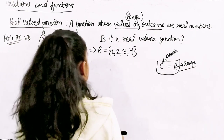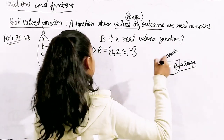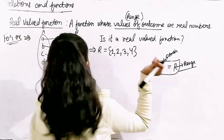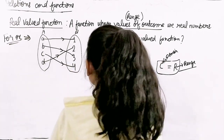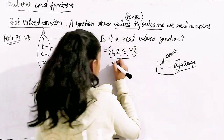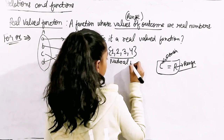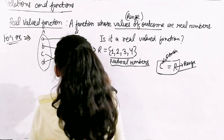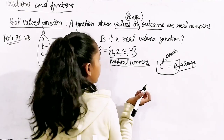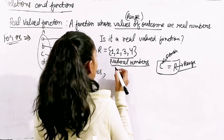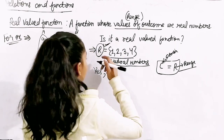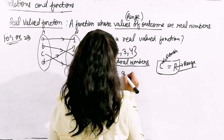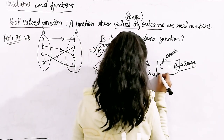Getting back to our main topic: we've seen the range, and we can see that all these are natural numbers. Natural numbers come within real numbers, so yes, it is a real valued function because the range is actually the set of real numbers.